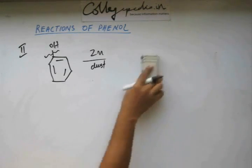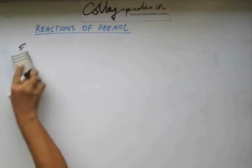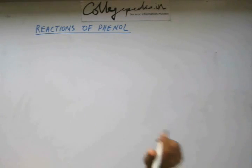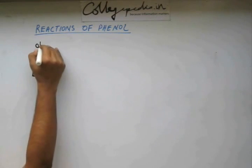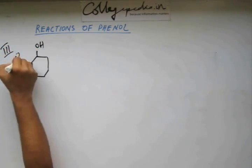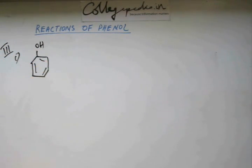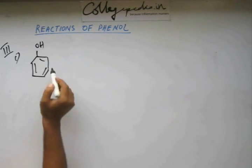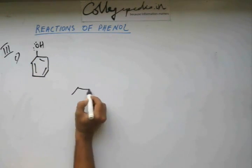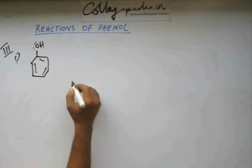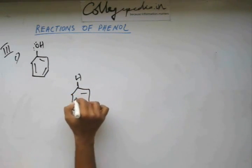Now let's move on to the third category of reaction in which there will be additions on the phenyl ring of this phenol. There could be many additions. Let's start from the kind of addition reaction that we studied in the chapter of hydrocarbon where we studied reactions on benzene. Now this is phenol. The one thing that you have to keep in mind is this phenyl ring in phenol is highly activated ring.